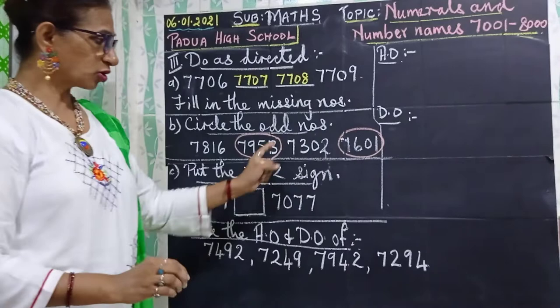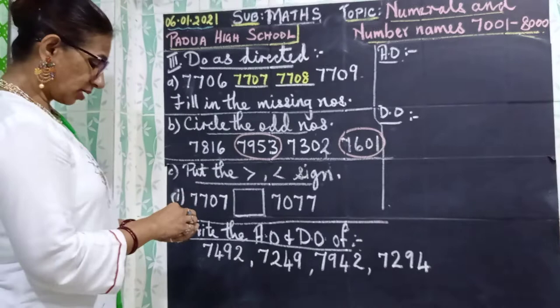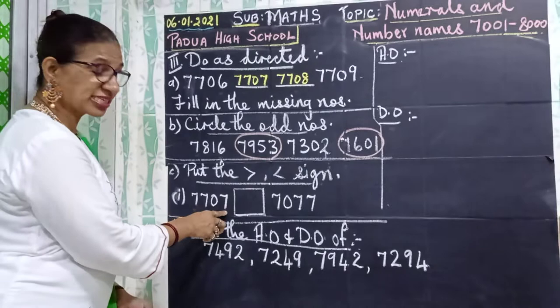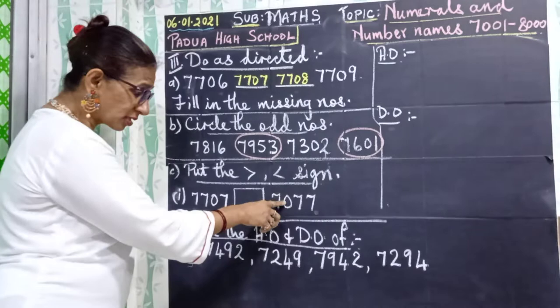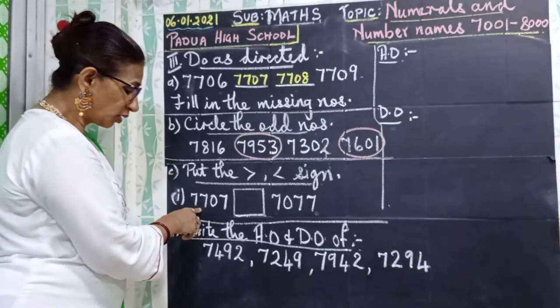Now put the greater than or less than sign. The number here is 7707. You have 700 in the hundreds place. Here it is 7077 — so there is nothing in the hundreds place, this is 0. So 7707 is the greater number, and you will be putting the greater than sign. Have you followed?